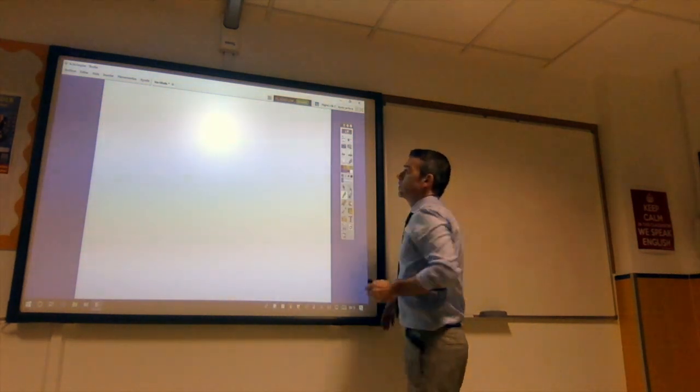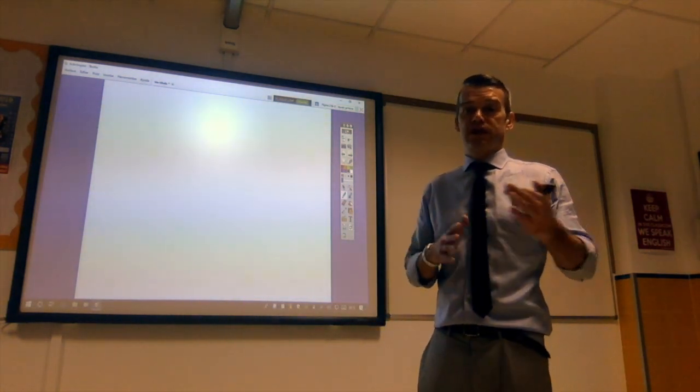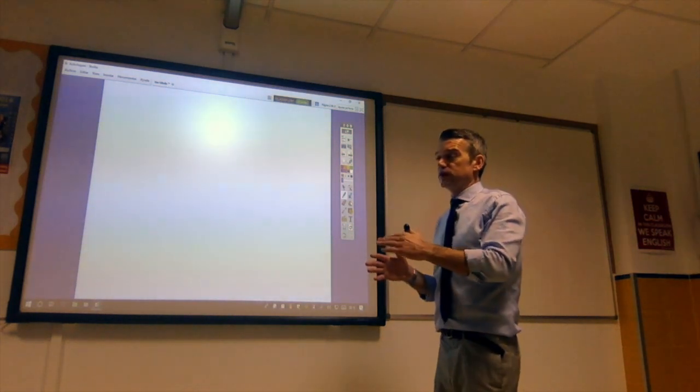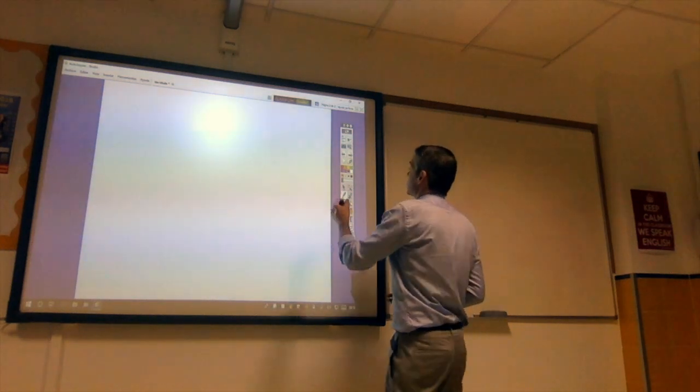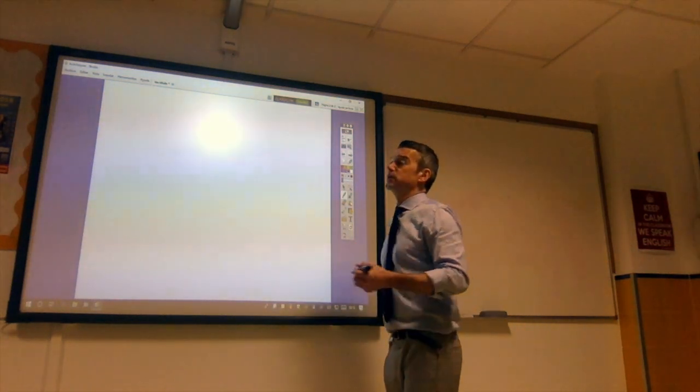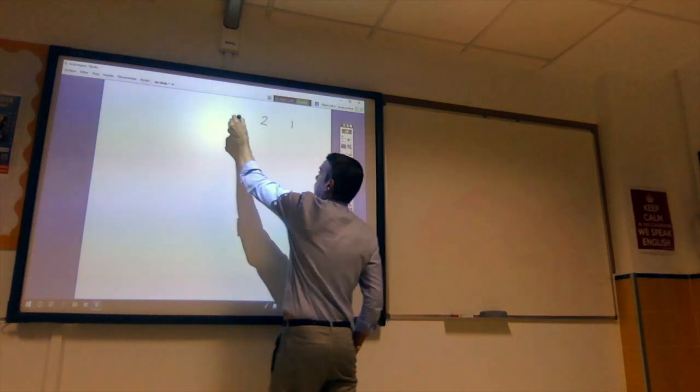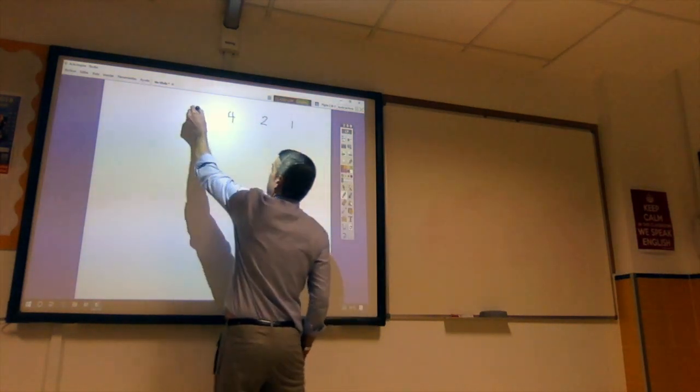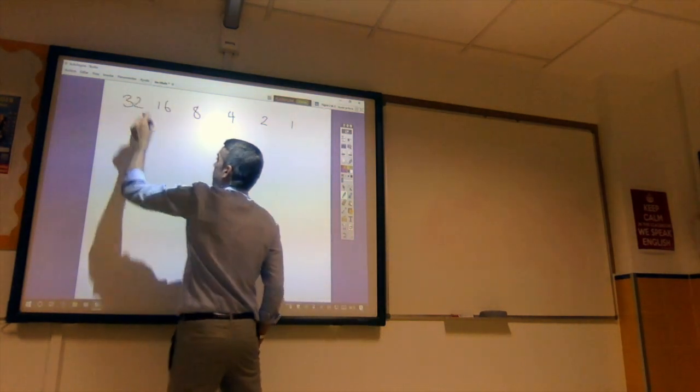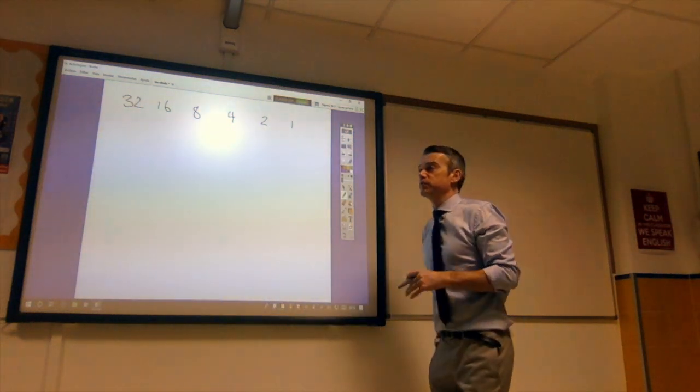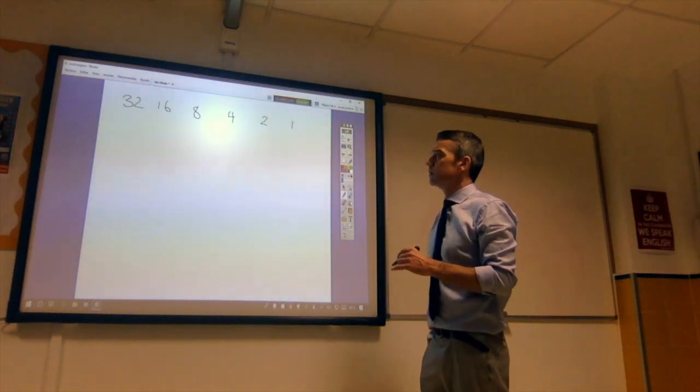Now, in binary, we do exactly the same thing, but we've got zeros and ones instead of units, tens and hundreds. Zeros and ones represent whether or not the value is being used or whether the value is not being used. So our columns are numbered slightly differently. We start with 1, then 2, 4, 8, 16, 32, and so on. They keep doubling because this is a base 2 number system. And I'll maybe get into what exactly that means in another video.